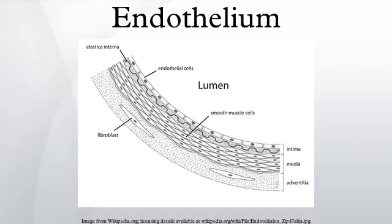Endothelium of the interior surfaces of the heart chambers is called endocardium. It is mesodermal in origin. Both blood and lymphatic capillaries are composed of a single layer of endothelial cells called a monolayer. In straight sections of a blood vessel, vascular endothelial cells typically align and elongate in the direction of fluid flow.